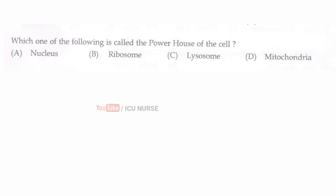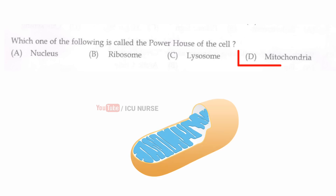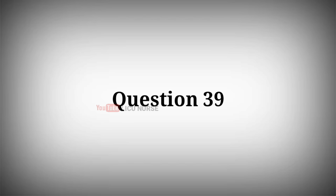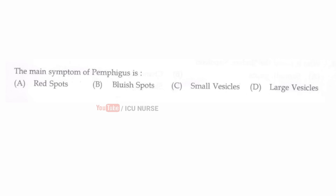Which one of the following is called the powerhouse of the cell? The correct answer is D, mitochondria. The main symptom of pemphigus is — the correct answer is D — large vesicles, that means large blisters.